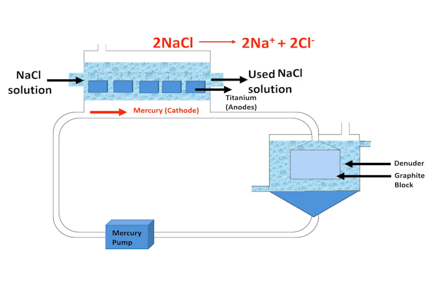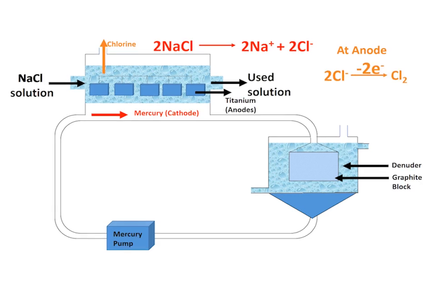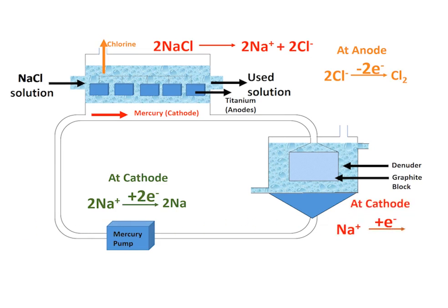Cations move towards cathode and anions towards anode. Chloride ions are oxidized at the anode and chlorine gas is liberated from the top. Sodium positive ions move towards the cathode, which is flowing mercury.